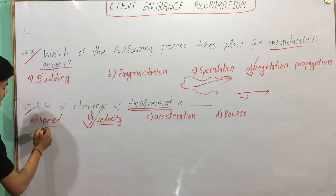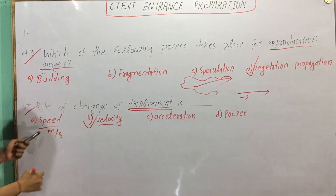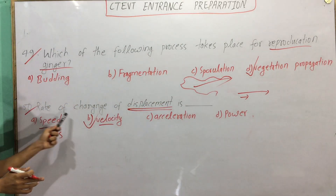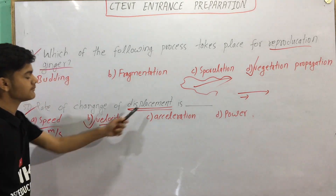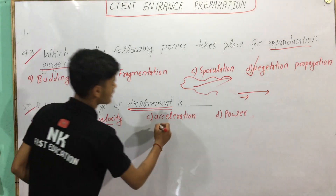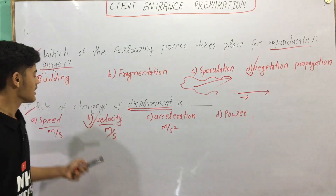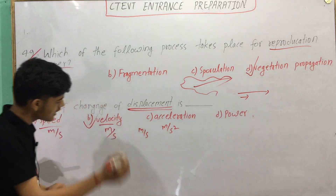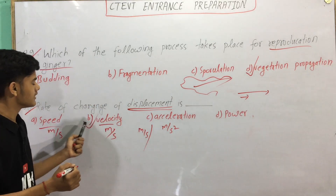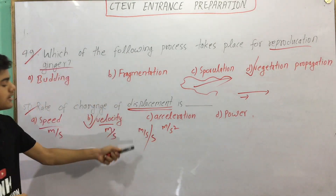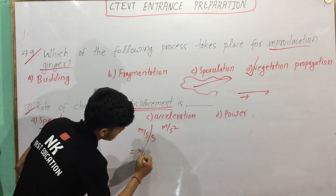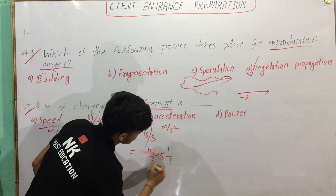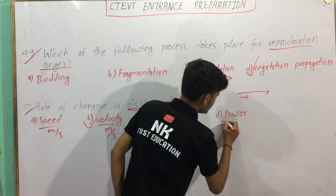Acceleration and velocity — the unit is the speed of meter per second. Displacement and distance unit is the meter. The rate of change per second is meter per second — velocity displacement is meter per second, acceleration meter per second squared. Rate of change of displacement is meter per second, and rate of change of velocity is meter per second squared.